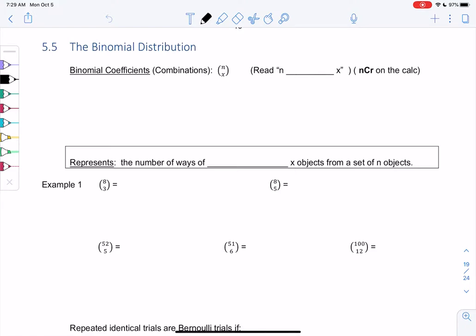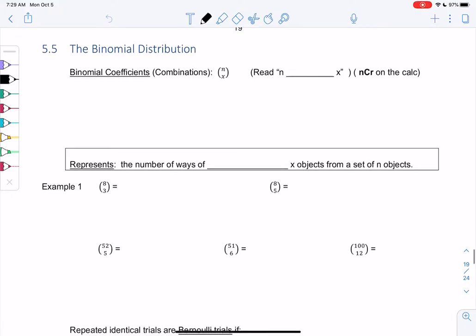So we're going to do this new function called combinations. We read this as n choose x. Notice it's not a fraction. There's no fraction bar. It has n over x. It basically, in a weird way, tells me how many groups I can make. We don't need to know the function, but if you ever have seen it in another class, it looks like these things called factorials. But don't worry, we're not going to do this, just in case you've seen it.